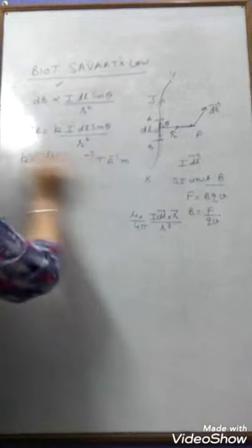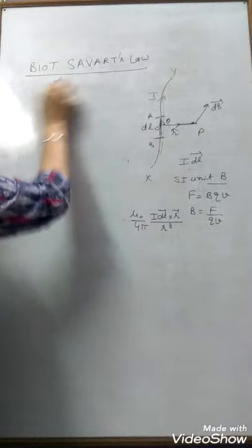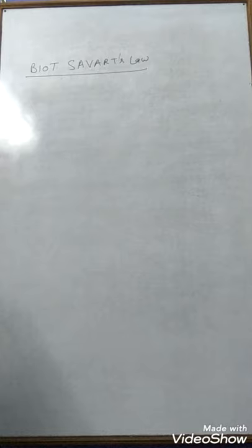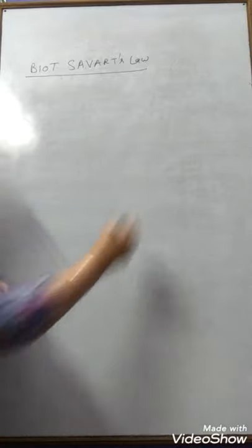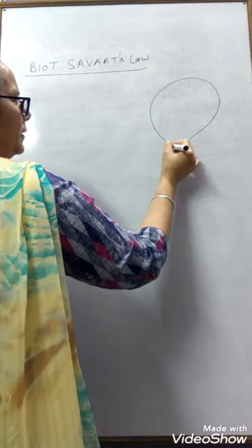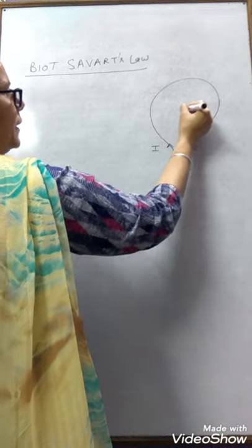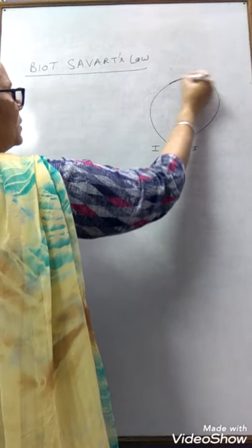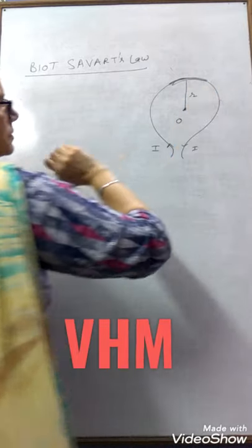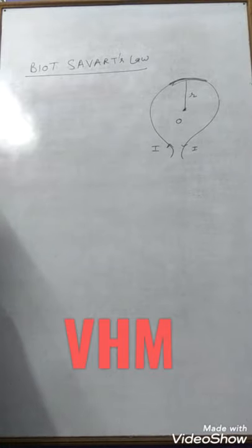Now we have some applications of Biot-Savart's law. The first and very important application is the magnetic field at the center of a circular loop. We consider a circular loop carrying current I with center O. To find the field, we consider a small element DL vector at a distance R (the radius of the circular loop) from the center.